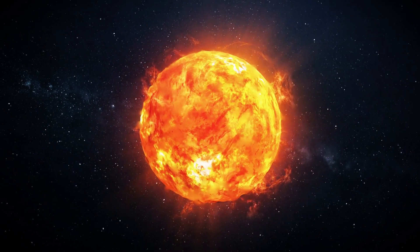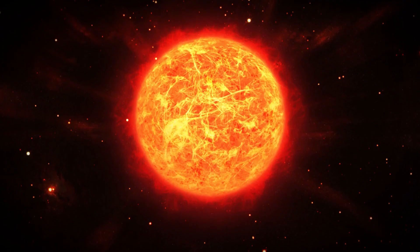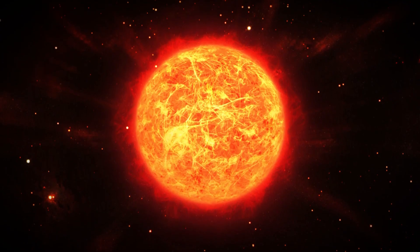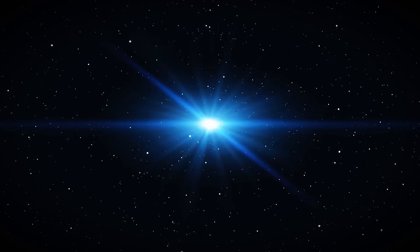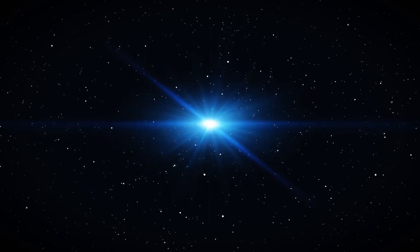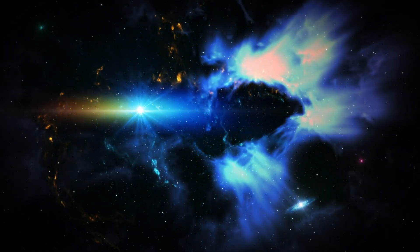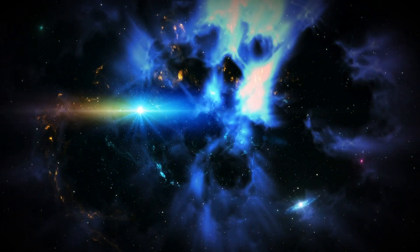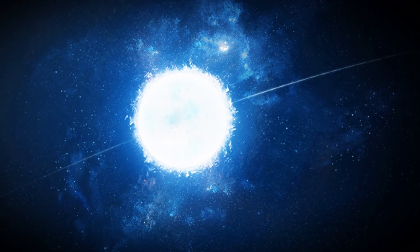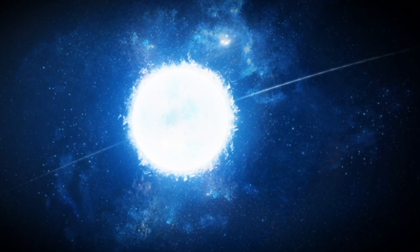Stars of medium mass, including our sun, expand into red giants after burning through their hydrogen. During this phase, helium starts fusing into heavier elements. The star then sheds its outer layers into space, forming a colorful planetary nebula. What's left behind is the hot core, which contracts into a white dwarf.